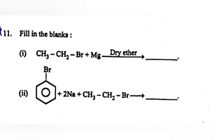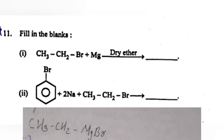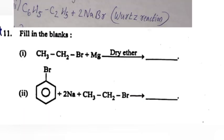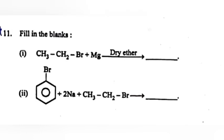Fill in the Blanks 1. CH3 CH2 MgBr 2. Answer: C6H5 C2H5 plus 2NaBr, i.e., Wurtz reaction.